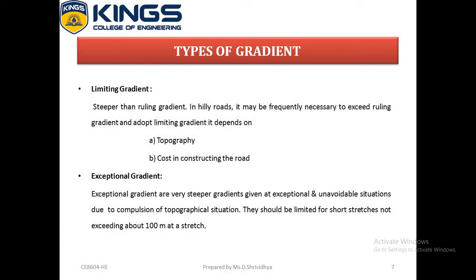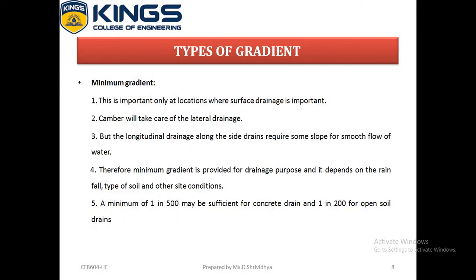The fourth type is minimum gradient. The minimum desirable slope essential for effective drainage of rainwater from the road surface is called minimum gradient. The desirable minimum gradient for this purpose is 0.5%. If the side drains are lined, a minimum of 1 in 500 may be sufficient for concrete drains and 1 in 200 for open drain soils.